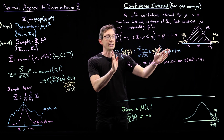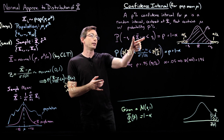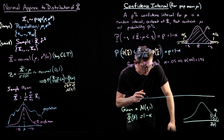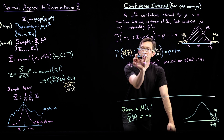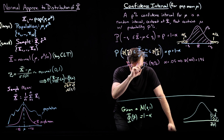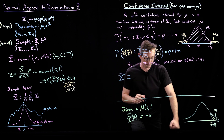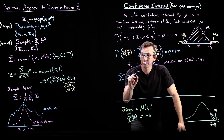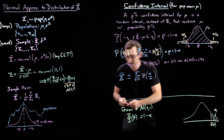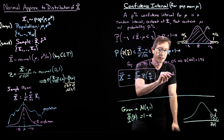That was all formulated in normalized coordinates where I divided by sigma over root n, but I really just want to know what the interval around x-bar is that contains mu. So multiplying both sides by sigma over root n, a 95% confidence interval is x-bar plus or minus sigma over root n times z of alpha over 2. This is the useful formula — this is my p% confidence interval.